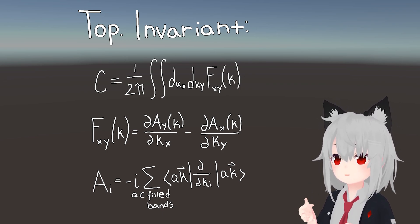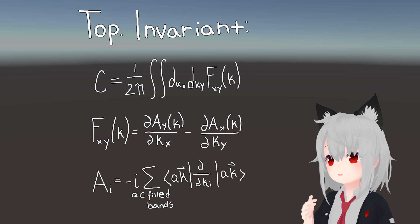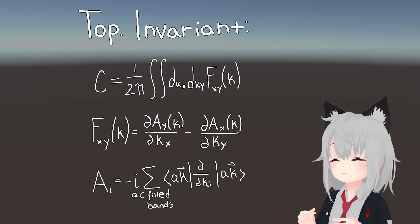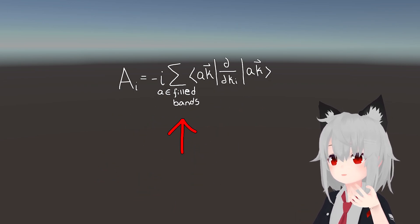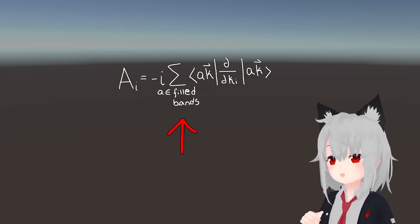Now, this Berry curvature is interesting in its own right, and definitely worth looking into, but for our purposes, all we really need to know is that this topological invariant depends on two things. The first is the number of filled states, and the second is the mathematical structure of those filled states.